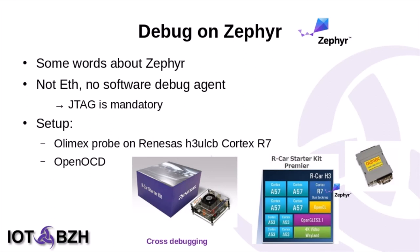I have finished covering Linux debuggers and would like to introduce Zephyr OS for those who don't know it, and do a small demo of debugging on it. Zephyr OS is a real-time OS aimed at microcontrollers. It has very nice documentation. Most APIs are similar to Linux kernel APIs. It supports device trees, but they are statically compiled. Since we are on microcontrollers, most of the time there is no Ethernet and no software debug agent, meaning you need a JTAG for debugging.